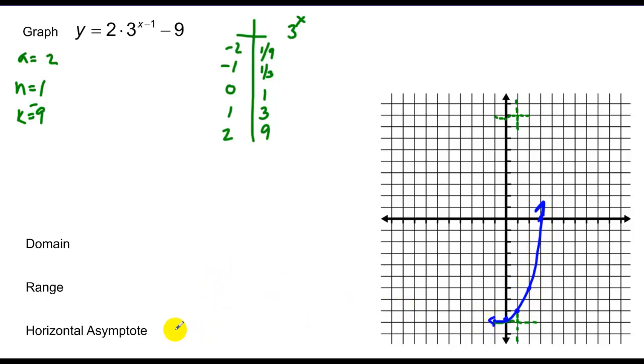Asymptote appears to be y equals negative 9. Domain goes both ways, all reals. Range goes as low as negative 9 but no lower, so y is greater than negative 9.